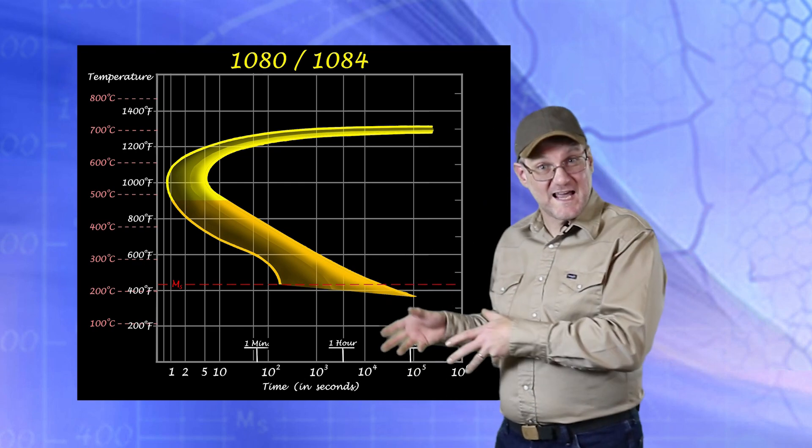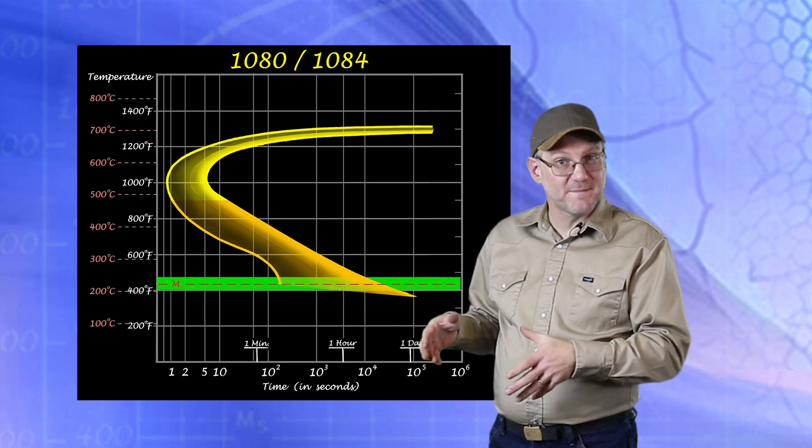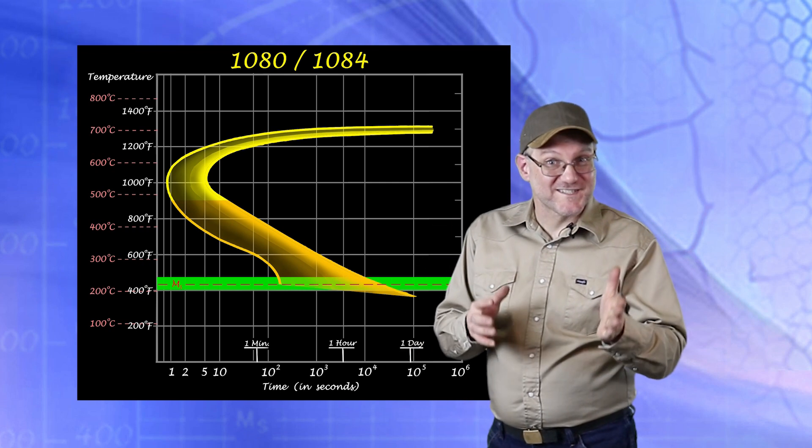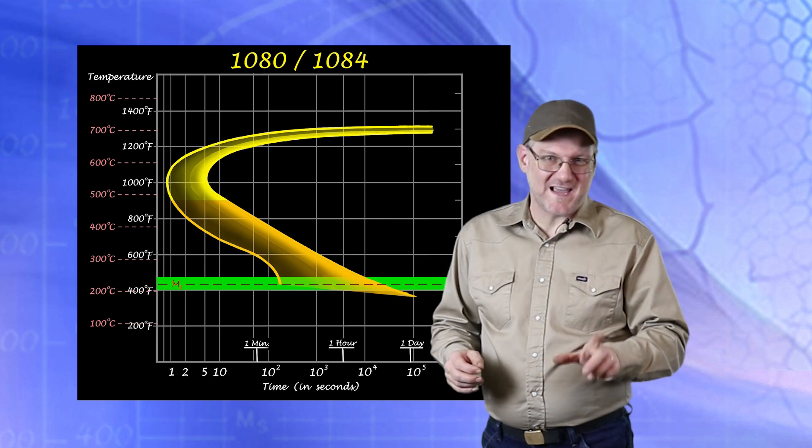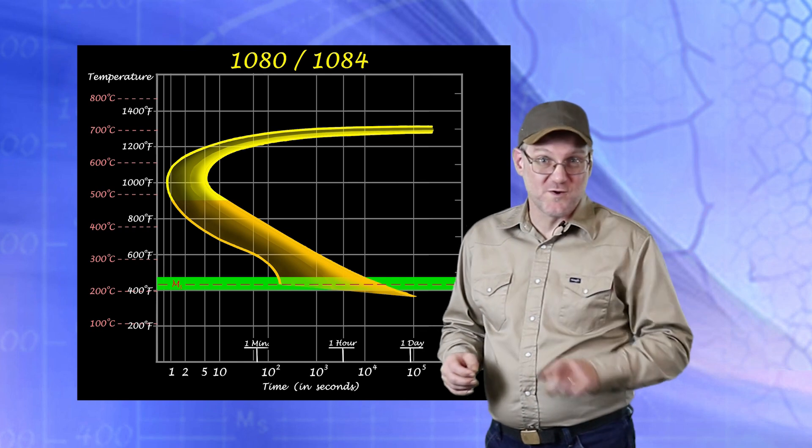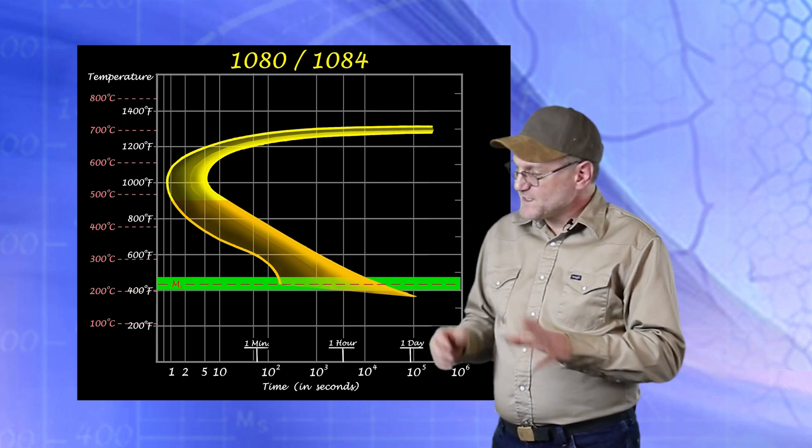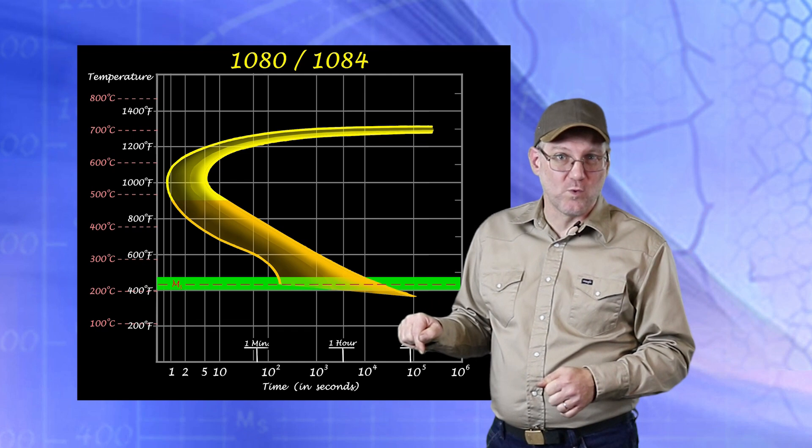At the bottom of the diagram is this line labeled M sub s. This stands for martensite start, and it is the most fascinating thing in the world for somebody who wants to make a knife. You see, austenite is not stable below A1.